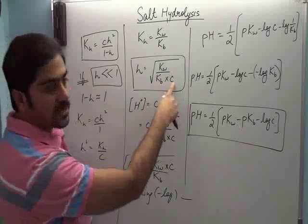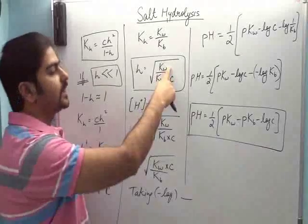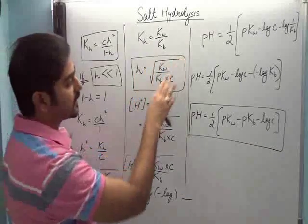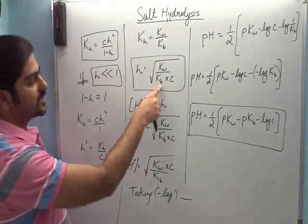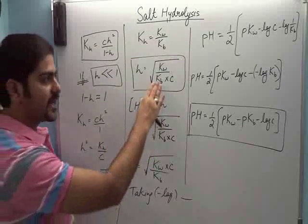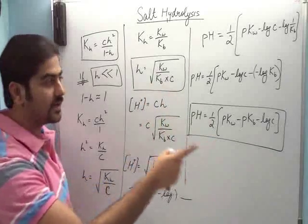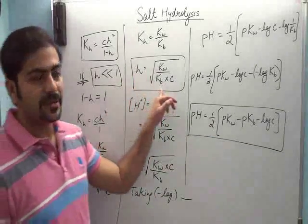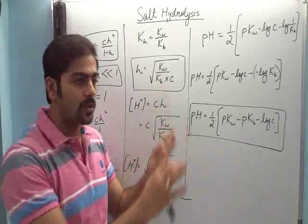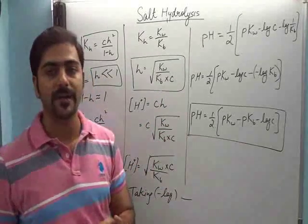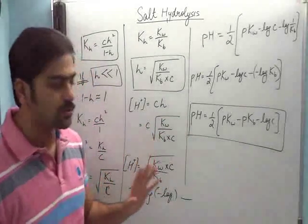To aapko check karna ka tariqa: aap yeh wala formula dekhiye. Question mein Kb aur C diya hua hai, Kw aapko khud pata hai. To aap rough mein H ki value calculate karke dekhiye. Agar point 1 se kam aa rahi hai, to matlab yahi value sahi hai, aap yeh formula laga sakti ho. But agar yeh wali value point 1 se zyada aa rahi hai, to matlab yeh formula aap nahi laga sakti ho. To aapko pura quadratic dhang se solve karna padega.